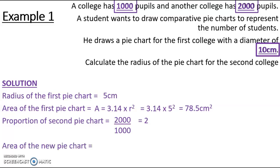So I'm going to work out the area of the new pie chart. So I'm going to double my area at 78.5 and that gives me 157 centimeters squared. So that's how big my pie chart for the second college needs to be.